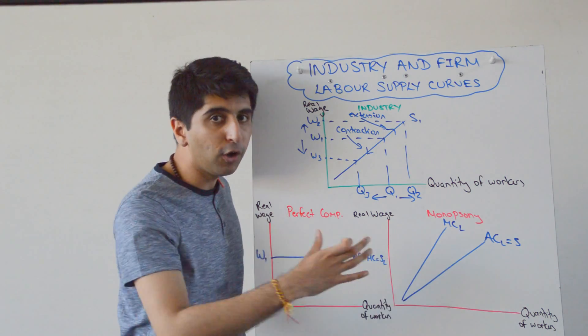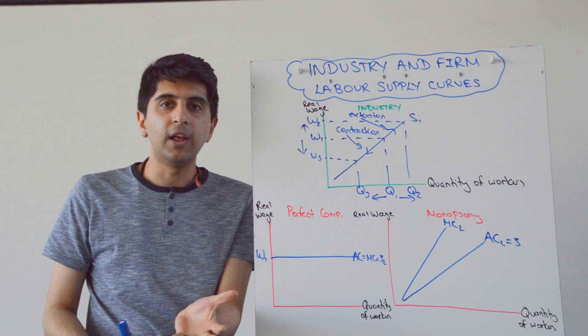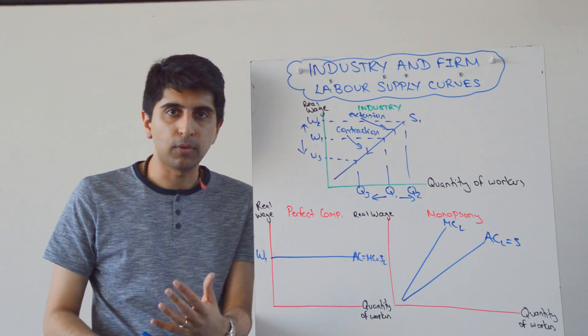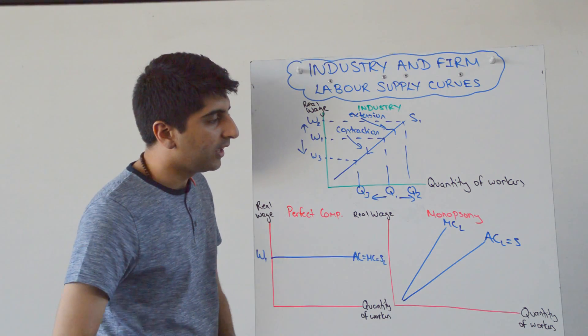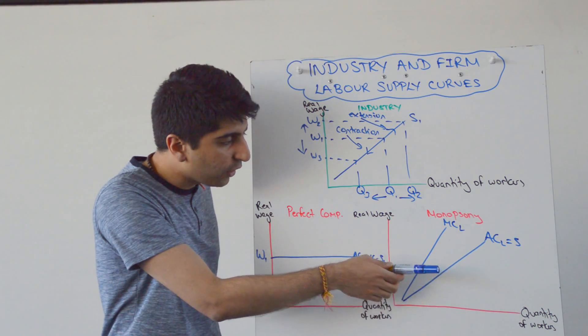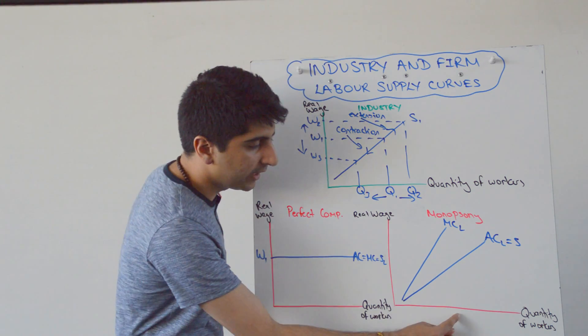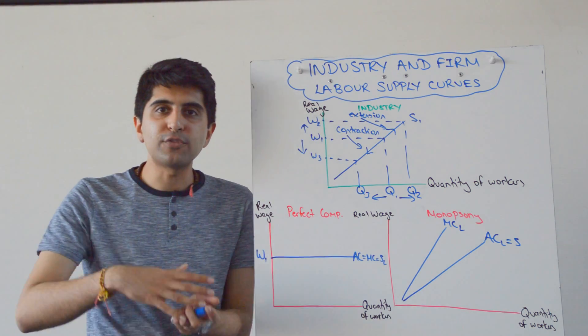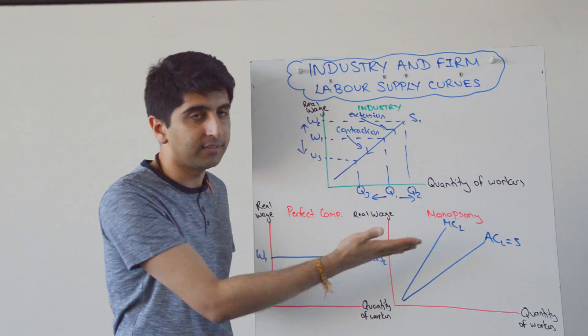For a monopsony, they're not a wage taker, they're a wage maker, because they have got control over the number of workers they can employ, they have control over the wages that they can charge or they can provide. So they can offer higher and lower wages, but as soon as they offer a higher wage, for example, it's not just a higher wage for the one additional worker, it's a higher wage for everybody, hence why the marginal cost curve is increasing faster, twice as steep.